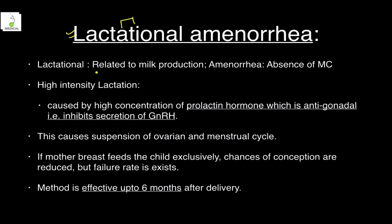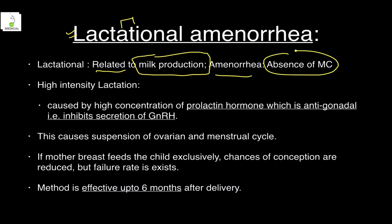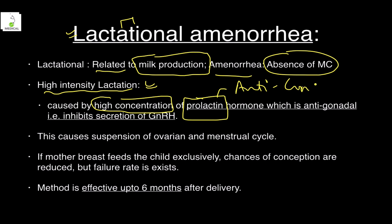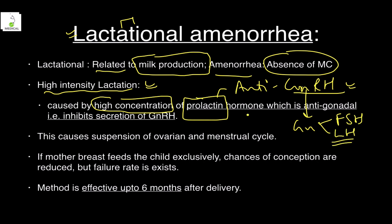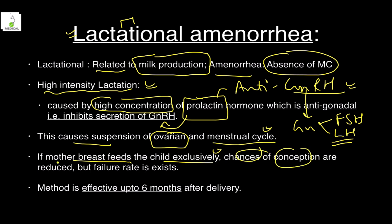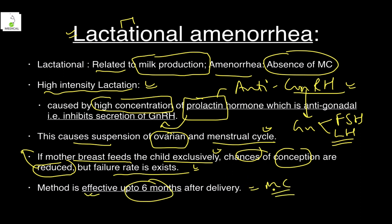Lactational amenorrhea: during high-intensity lactation, high concentrations of prolactin act as anti-GnRH, inhibiting gonadotropin-releasing hormone from the hypothalamus. This suppresses FSH and LH release, which are crucial for ovulation, so the menstrual cycle ceases. If a mother breastfeeds exclusively, chances of conception are reduced to almost zero — but failure rate is still high, and the method is only effective up to six months.